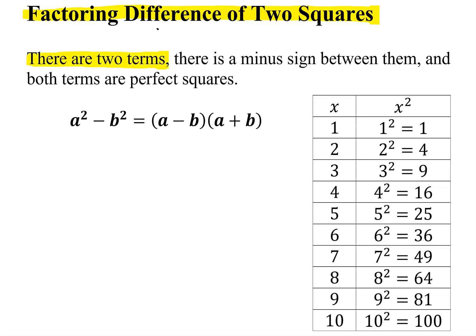There have to be two terms. There is a minus sign between the two terms, and both terms must be perfect squares.